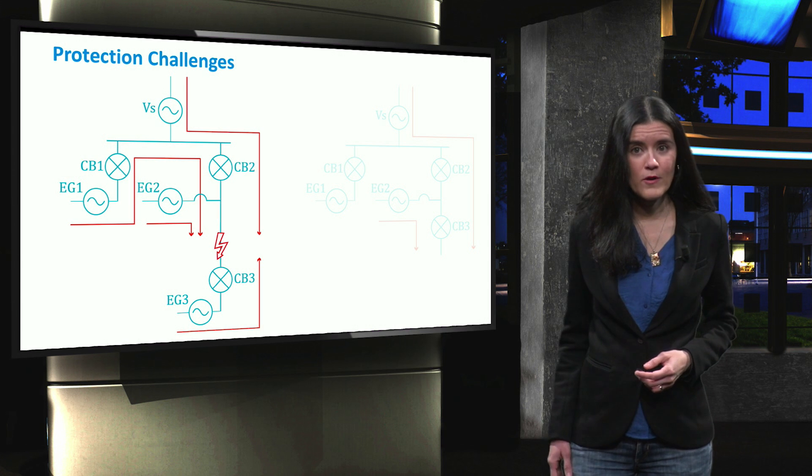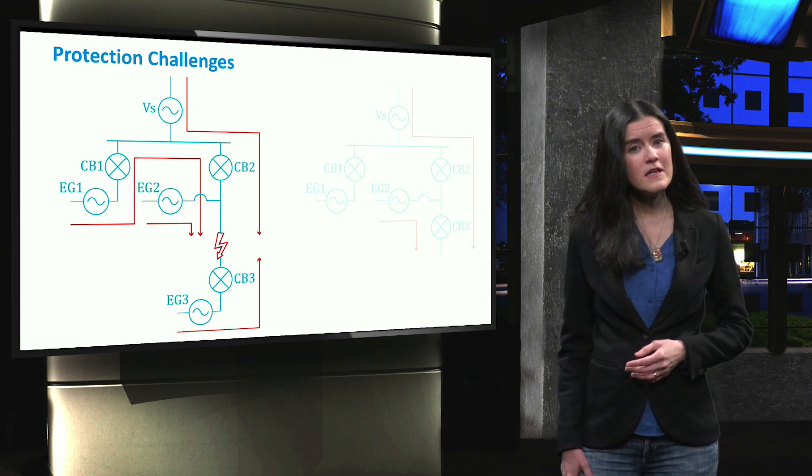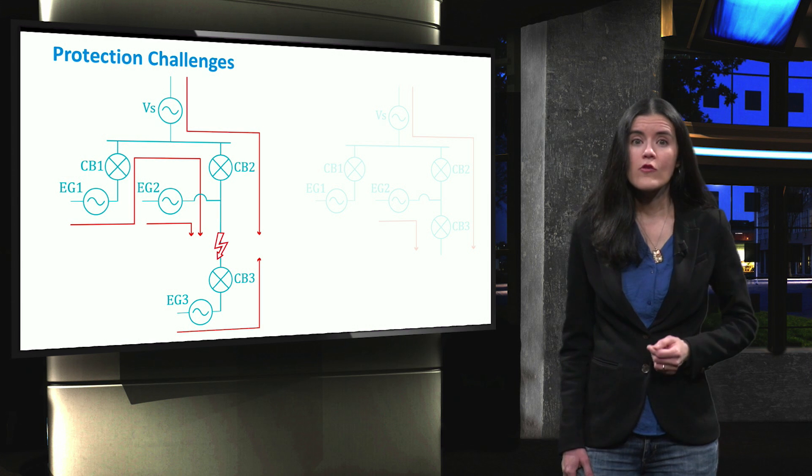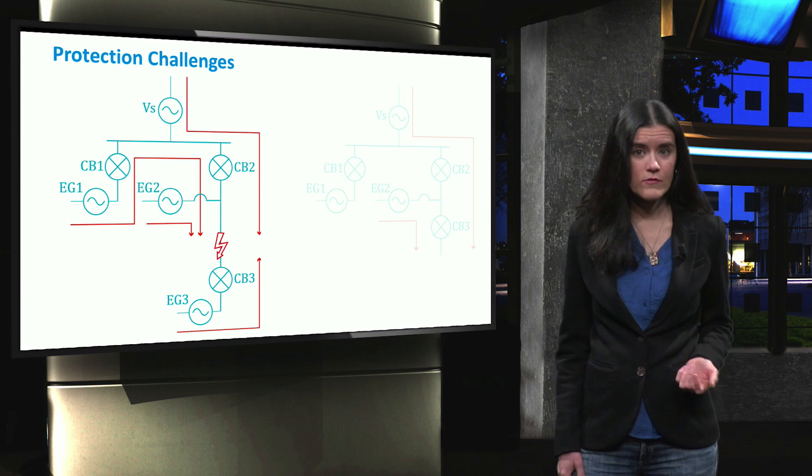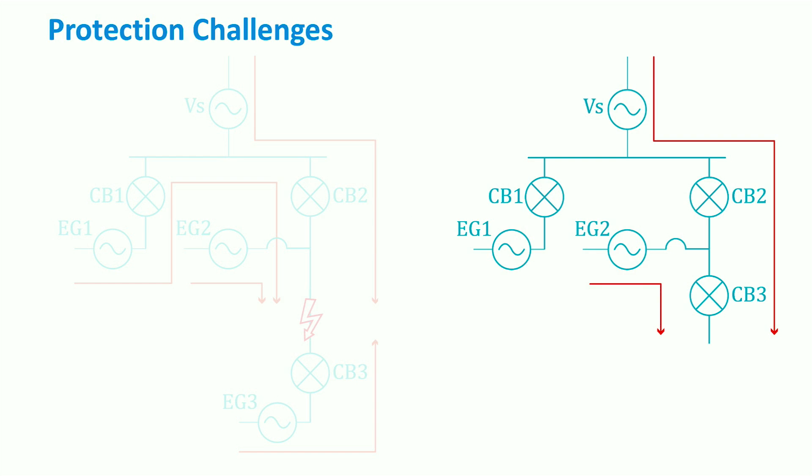An additional problem caused by distributed generators in microgrids is false tripping, where the normal current from the neighboring feeders is added to the fault current, increasing it as a result.